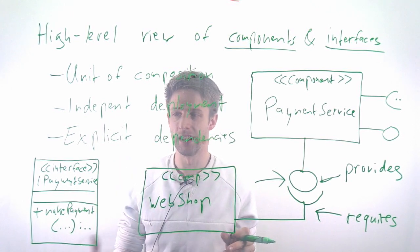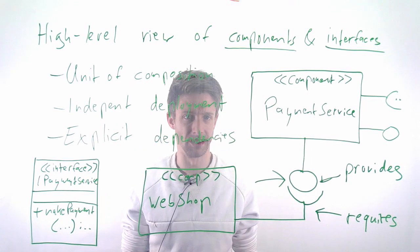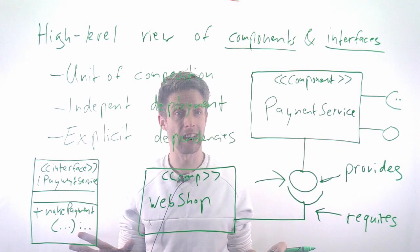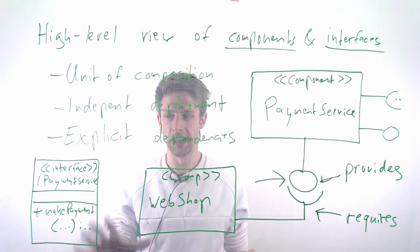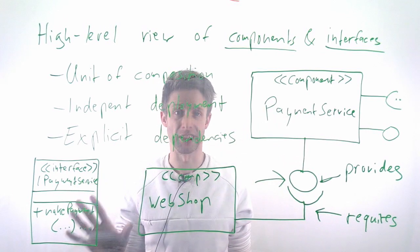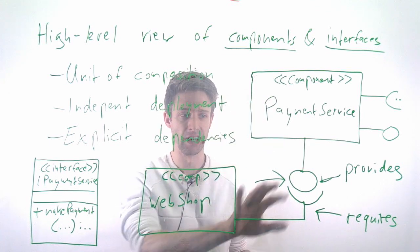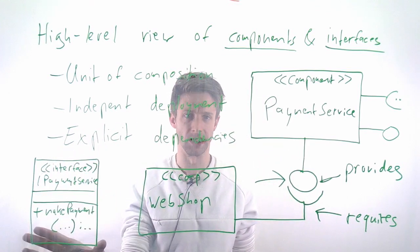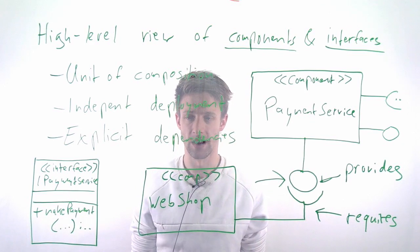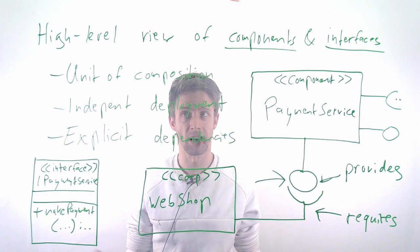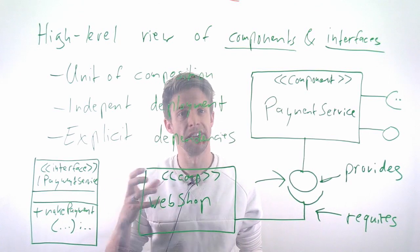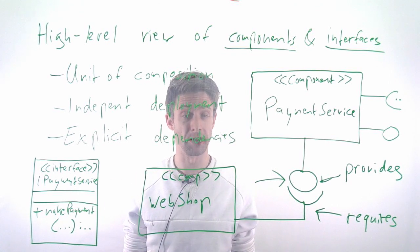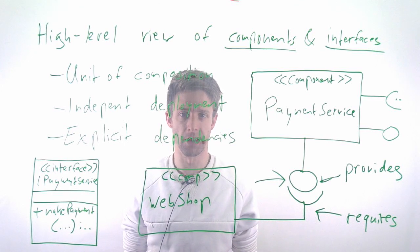This is what we would typically have in a UML component diagram. As with UML, there are many more details, so you can definitely go into depth. But in many cases, if you look at software architecture, this is the level you'll see: components, provides and requires interfaces, and if needed, details on how the interface looks like. That was a quick overview of the UML component diagram. Now we really go into the topic of how do we actually do software architecture and what are the important things to look at.